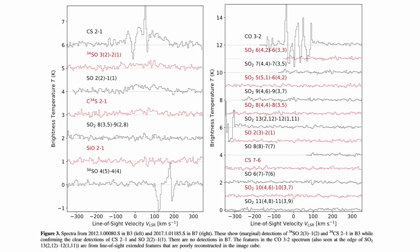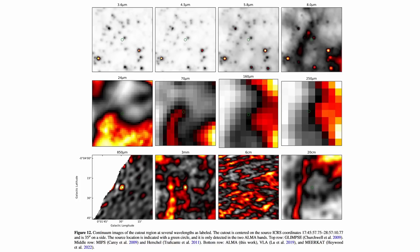Moreover, the chemical composition of the MUBLO presents anomalies with ratios of sulphur-based molecules, like sulphur monoxide and sulphur dioxide, differing markedly from those found in conventional galactic and extragalactic environments. Additionally, the object displays strong continuum emissions at millimeter wavelengths, indicative of significant dust content, yet its thermal properties and spatial distribution challenge conventional models of molecular cloud behaviour.